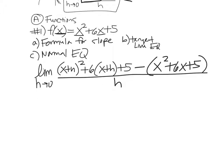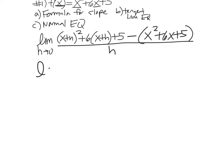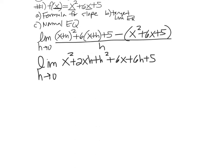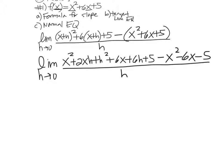Here's where your algebra skills are super important. We're going to FOIL the first term — please never write x squared plus h squared, there's a middle term. So: x squared plus 2xh plus h squared, distribute the 6 to get 6x plus 6h, plus 5, then subtract x squared, subtract 6x, and subtract 5, all over h. Please write the limit as h goes to 0 every time, or it's technically wrong.